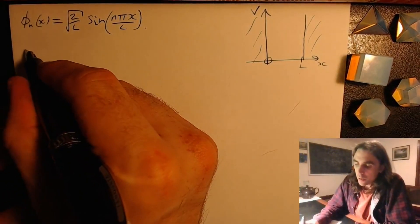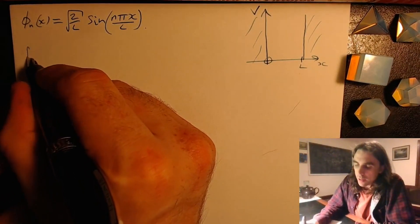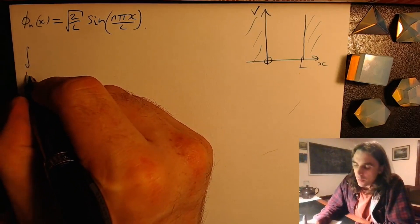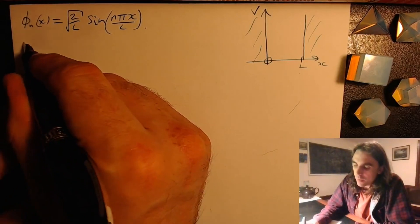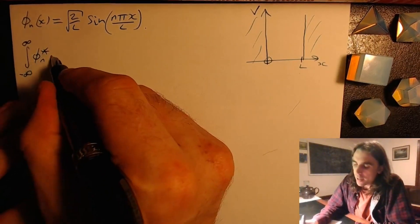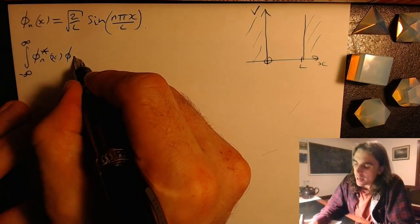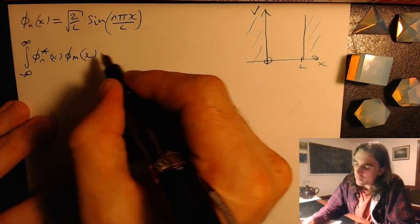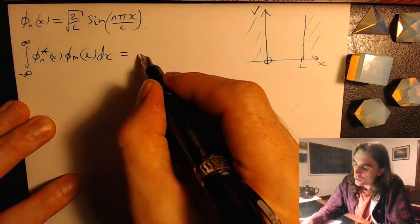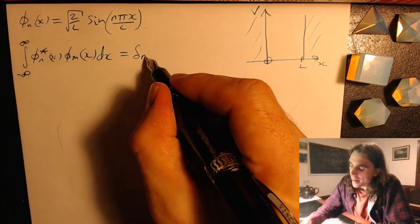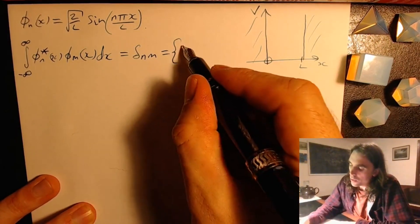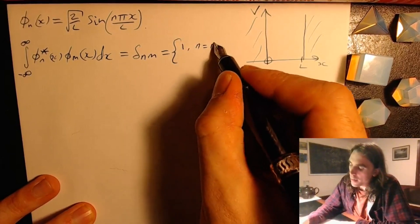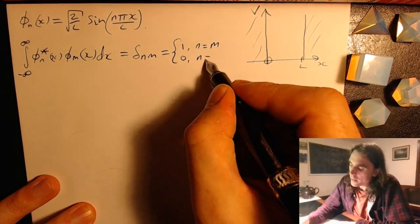and zero within the well. And we've seen that the normalized eigenfunctions look like this. And this time we'd like to prove that two eigenfunctions are orthogonal to each other. So what this means is that the integral from minus infinity to infinity of phi n star x, phi m x dx equals delta nm, which by definition equals 1 if n equals m, 0 if n doesn't equal m.